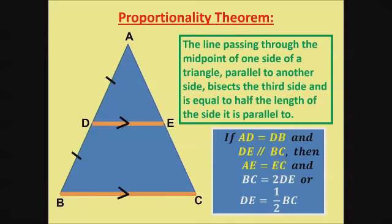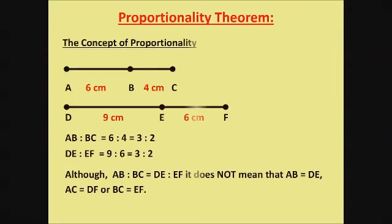Let me just show that to you. If AD is equal to DB, and DE is parallel to BC, then AE is equal to EC, and DE is half of BC. So those are the things that you need to understand. And just lastly, so that you don't get confused. What is the concept of proportionality? What does it mean?